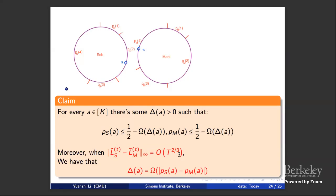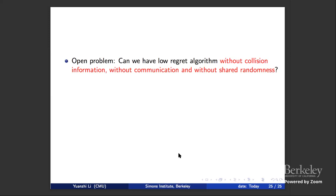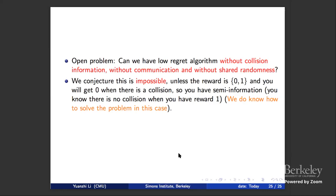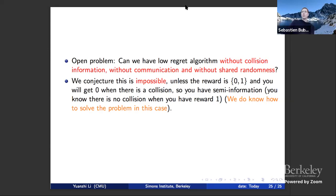As open problems: can we have a low-regret algorithm without collision, without collision information, without communication, and without shared randomness? We conjecture this is impossible in general, unless the reward is zero-one and you get zero when there is a collision — giving some implicit information. We do know how to solve the problem in that special case, but in general we conjecture it's impossible.